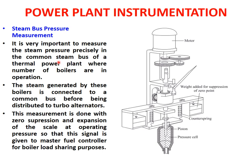The steam generated by these boilers is connected to a common bus before being distributed to turbo-alternators — that is, the turbines which are propelled by steam. This measurement is done with zero suppression and expansion of the scale at operating pressure, and the signal is given to the master fuel controller for boiler load sharing purposes.